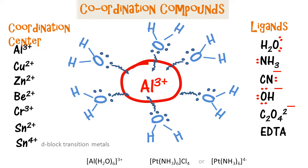Coordination compounds have a central metal ion, like the aluminium ion shown here, which are attached by ligands. Ligands are ions or molecules which have a lone pair of electrons, and these lone pairs attach themselves in a coordinate bond to the central metal ion. These metal ions are typically the d-block transition metals.